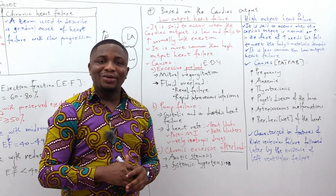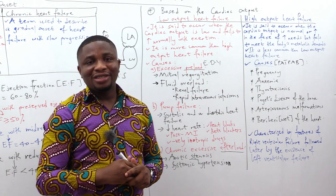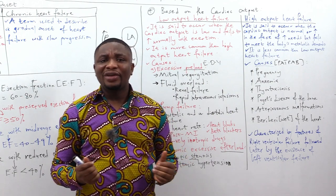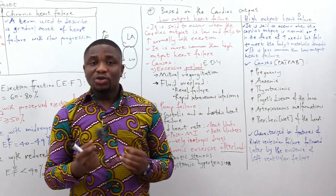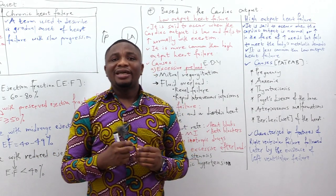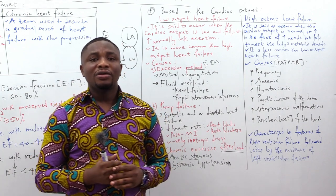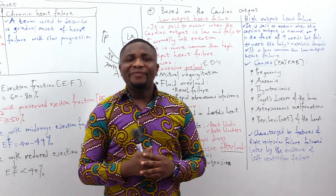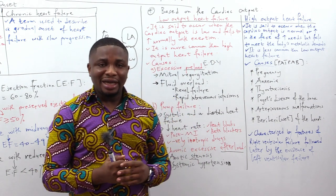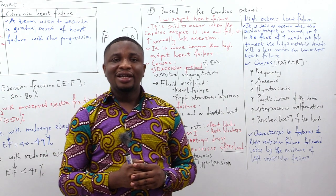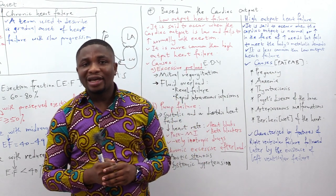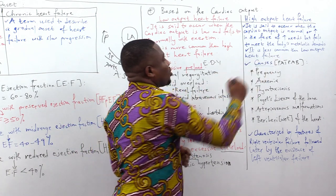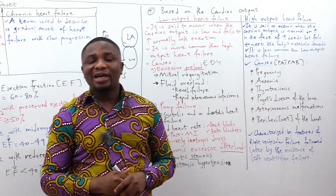Let's look at high output cardiac failure. High output heart failure occurs when the cardiac output is normal or high in the face of increasing needs but still fails to meet the body's metabolic demands. High output heart failure is less common compared to low output cardiac failure.